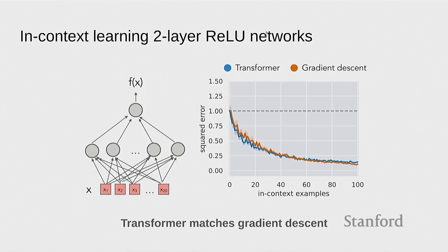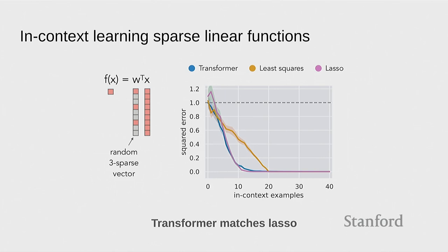Note that we did have to train the transformer to do this — it's not magic. Otherwise it wouldn't know about sparsity at all. What about two-layer neural networks? Here the baseline we looked at is gradient descent, and it basically matches gradient descent — that's nice. If you took the original transformer trained on non-sparse functions and applied it to the sparse question, this should match the least squares objective, since sparse linear functions are a special case of linear functions. The previous transformer acted like least squares on a fairly wide range of distributions.